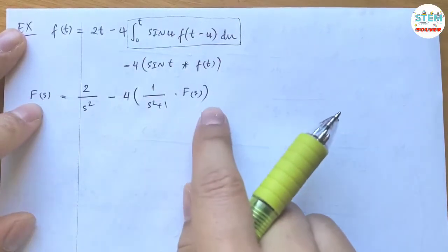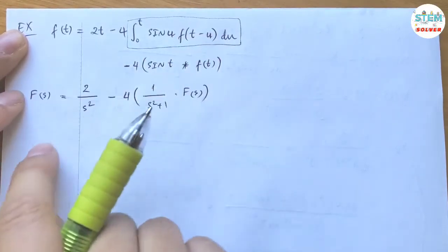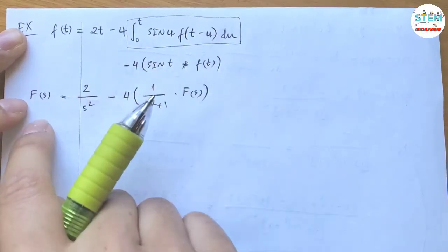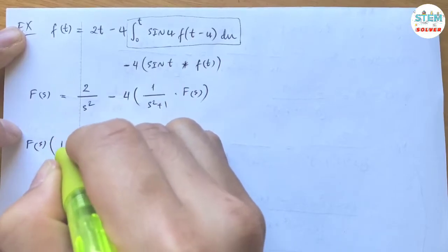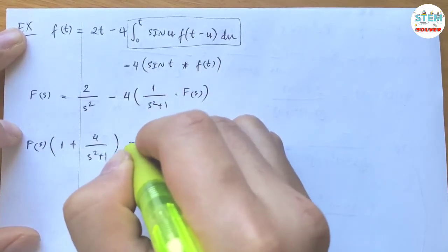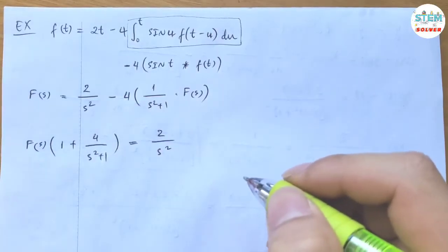Now you can see we have F(s) and F(s) on both sides, so we're going to move it to one side. I'm going to move it to the left side and factor it out, which gives me capital F(s) times (1 + 4 over s² + 1) equals 2 over s².